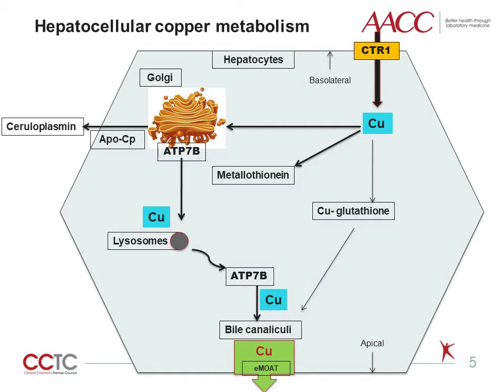Copper also gets incorporated into apoceruloplasmin at the trans-Golgi apparatus with the help of ATP7B, a transmembrane copper-transporting P-type ATPase protein which is a product of the Wilson's disease gene, to form ceruloplasmin that enters into the systemic circulation. In response to increased hepatocellular copper content, ATP7B relocates to a vesicular compartment close to the canaliculi membrane to cause biliary copper excretion. Whenever the copper concentration is low, ATP7B incorporates copper into apoceruloplasmin to generate holoceruloplasmin, but at high concentration of copper, it expedites the excretion of copper through the biliary system. Thus, ATP7B acts as a sensing and monitoring device for copper within hepatocytes.